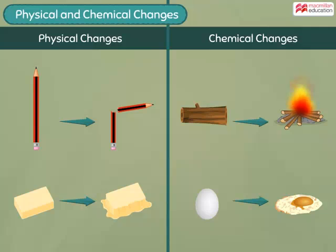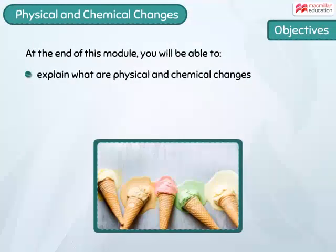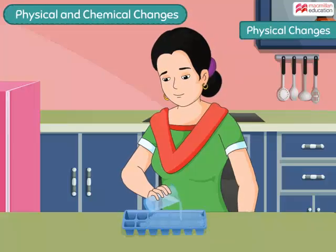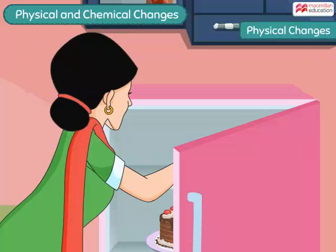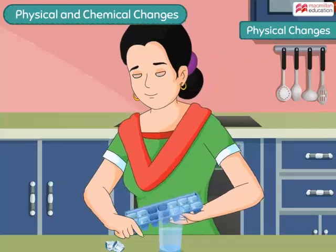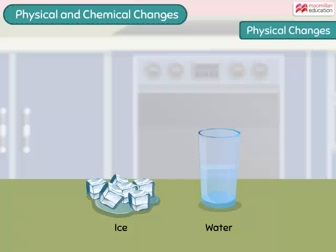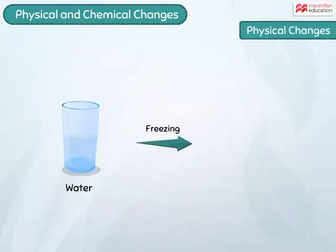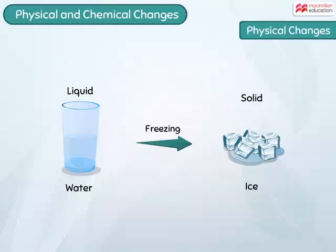All the changes that take place in our surroundings are either physical or chemical changes. When water is frozen it forms ice. However, ice and water are made up of the same type of substance — water molecules. This means that freezing just changes the physical form of water from liquid to solid, but the molecules inside remain the same.